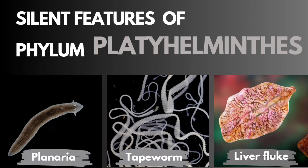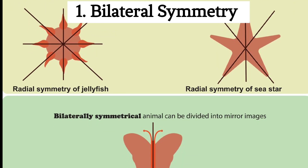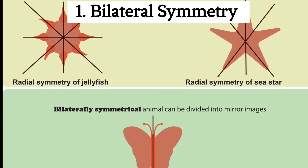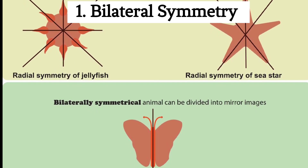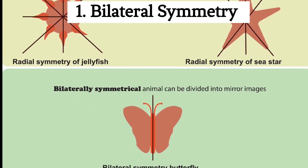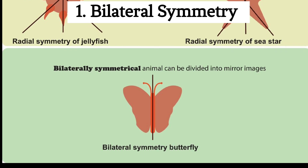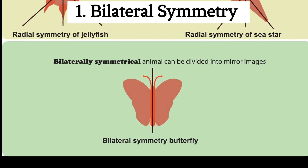The phylum Platyhelminthes, which includes flatworms, have the following characteristic features. First, bilateral symmetry: Platyhelminthes exhibit bilateral symmetry, meaning they have a distinct right and left side, with a single plane of symmetry running down their midline.